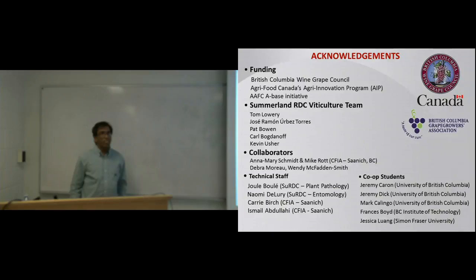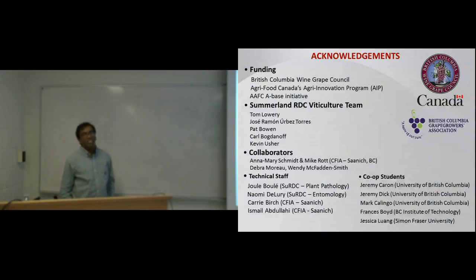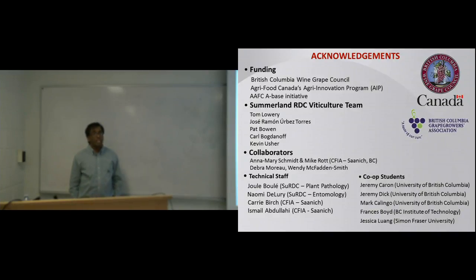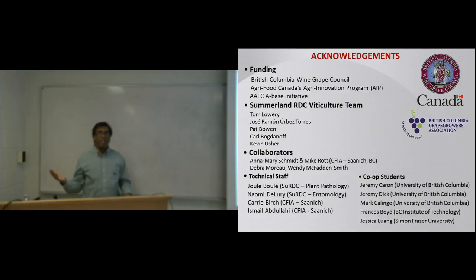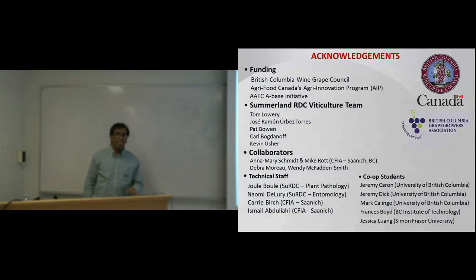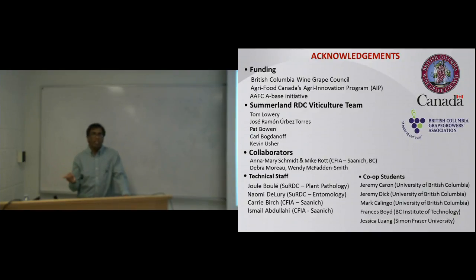Also, some viruses like grapevine stem pitting-associated virus cause grafting incompatibilities. If you graft an infected rootstock with a healthy scion, the incompatibility likely leads to more mortality. A follow-up question: the vine didn't just fail to catch — it also struggled in the ground. When you compare to healthy ones, growth is not as good, and you can see the plant is very sick. Symptoms in young vines are more severe than in established ones.